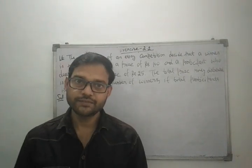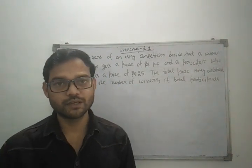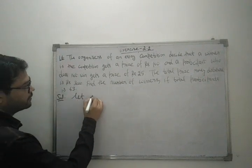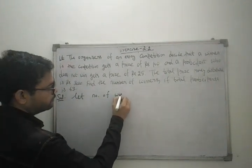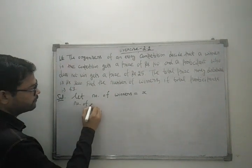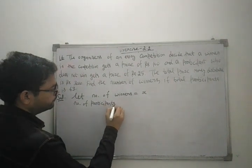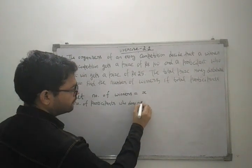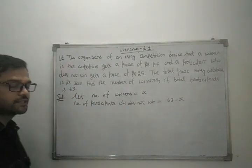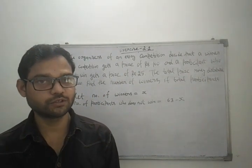We don't know the number of winners, so let number of winners equal x, and number of participants who does not win is 63 minus x. Total participants is 63, so if we have x winners minus from 63.